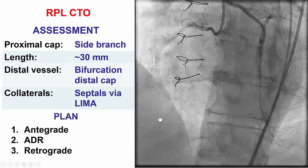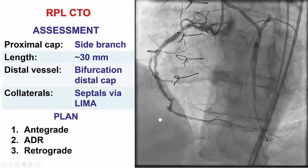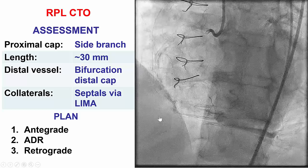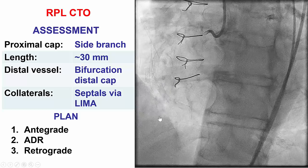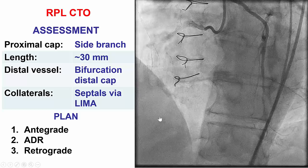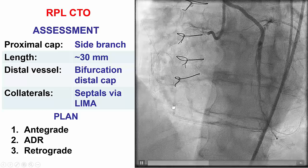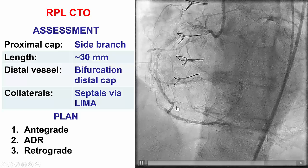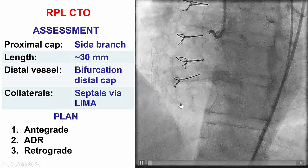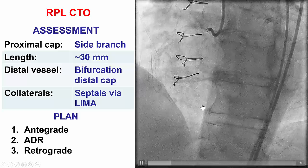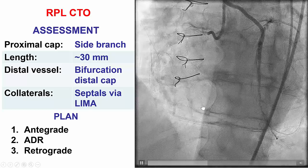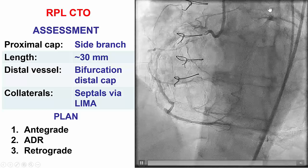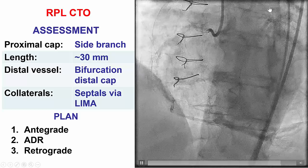In summary, we have a patient with an occlusion of the distal RCA's last right posterolateral branch. The occlusion is at the takeoff of the posterior descending artery, about 30 millimeters long, with a bifurcation on the distal cap that fills via collaterals from the LAD and the LIMA.